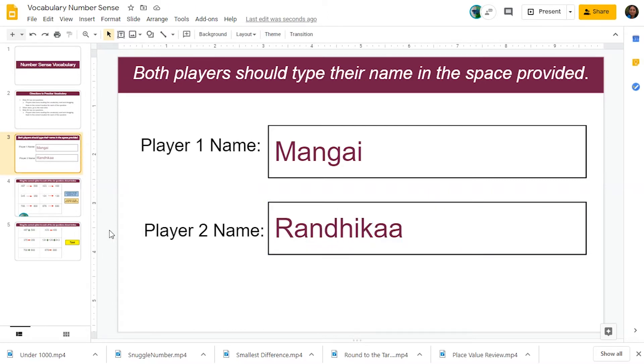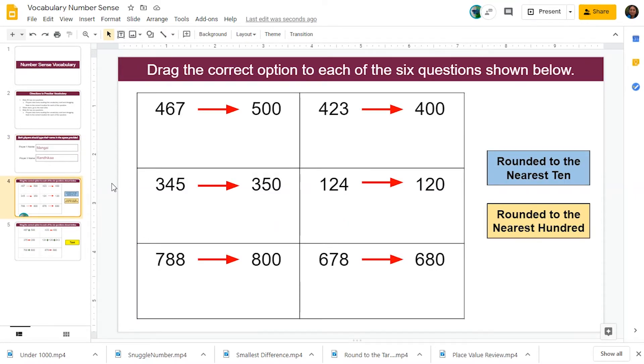There are two levels of activities, one in slide number four and one in slide number five. Slide number four has six questions given to you. We need to drag the correct option that matches the six questions.